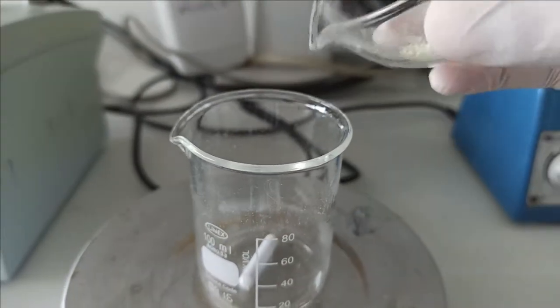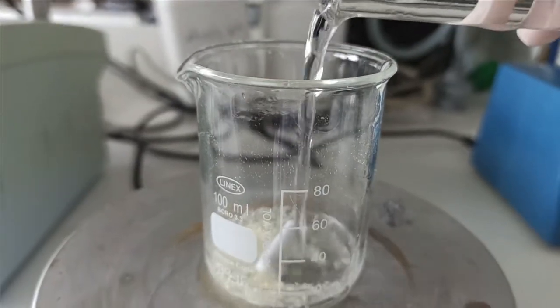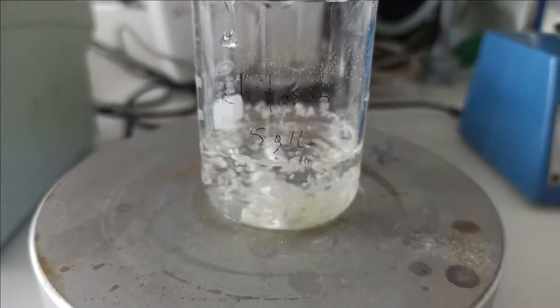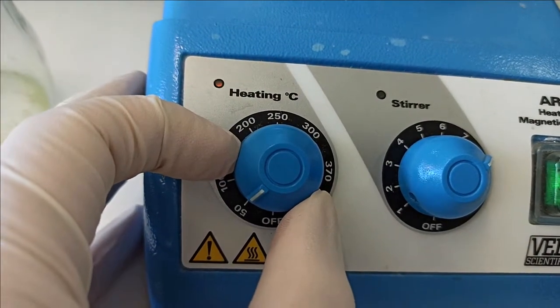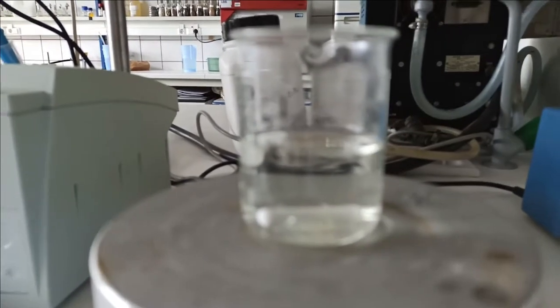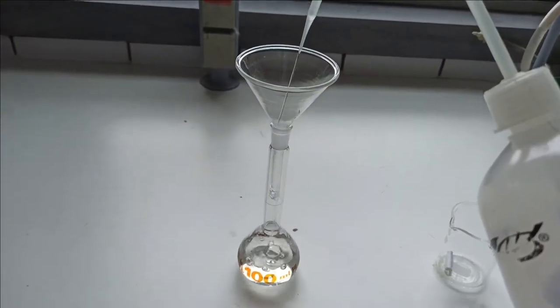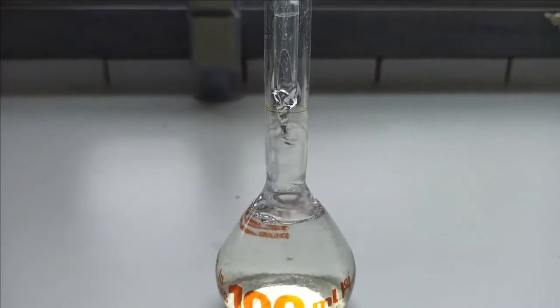First we prepare a chitosan solution of 5g per liter by first dissolving it in 0.1mol of hydrochloric acid. As chitosan is not easily dissolved, you may increase temperature to around 50 degrees. After 30 minutes the solution should be already clear. Add then the same amount of volume with ultra-pure water to achieve the final concentration.